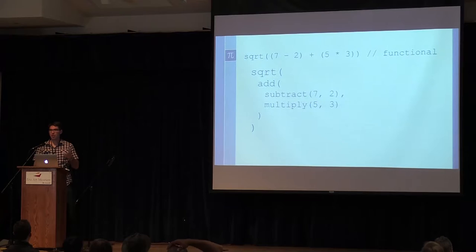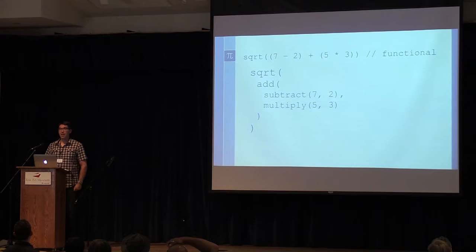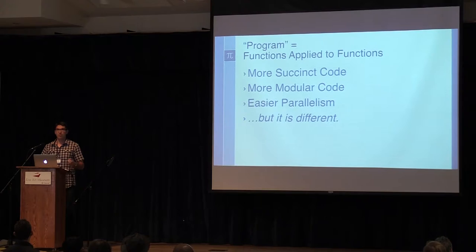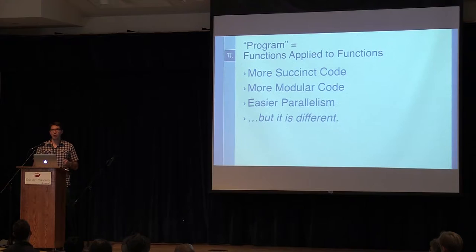There's also easier parallelism. With other paradigms you're often forced to do things sequentially. In Clojure, for instance, if you want to apply a function to a list of values, you use map. If you want to do it in parallel across as many cores as you have, you just change it to pmap — that's the only change needed. It becomes very easy in functional languages to extend out to an arbitrary number of cores, threads, or processes.